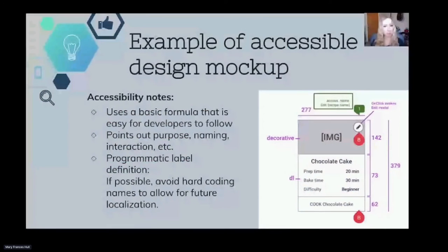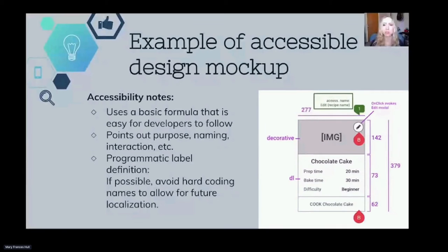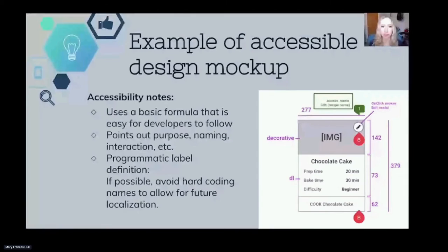An example of an accessible design mockup you can pass off to a developer is this example of a card. Note the accessible naming strategy used — it includes a basic formula that is easy for developers to follow, for example 'edit [name of the item].' This makes it a lot easier from the designer to the developer to add accessibility in, pointing out the purpose, the naming, the interaction, etc. Also, if possible, avoid hard-coding names as this allows for future localization.